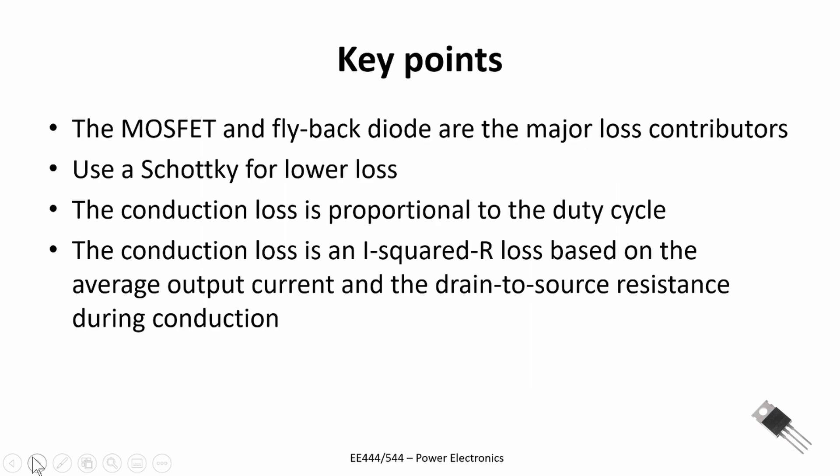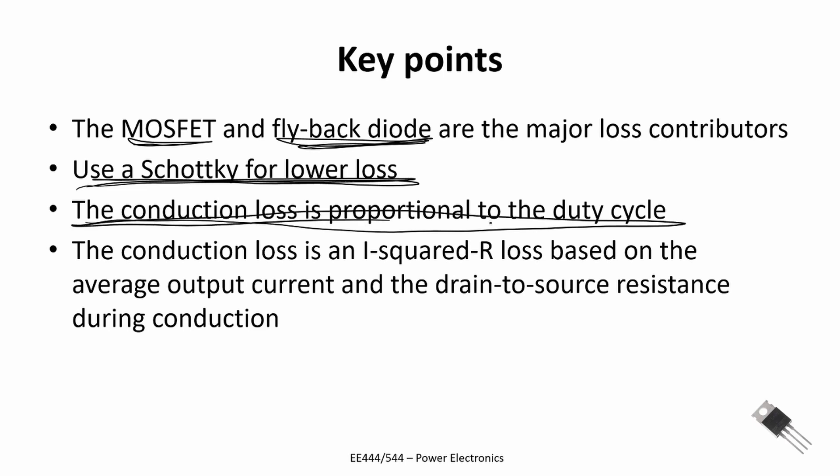Let's review the key points. So the two major loss contributors in the DC to DC converter are the MOSFET in conduction and the flyback diode. Those typically are going to be your major loss contributors. Oftentimes we're going to use a Schottky diode because it has a lower voltage drop compared to a silicon diode. The conduction loss in the MOSFET is proportional to the duty cycle. And it's what's called an I squared R loss. And it's based on the average output current from the drain to source, RDS.